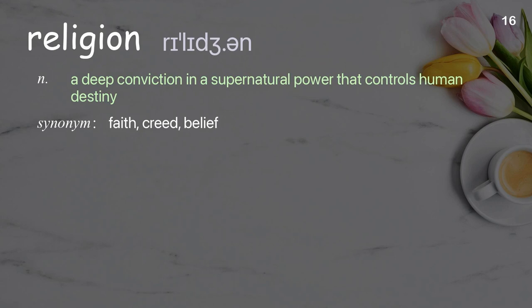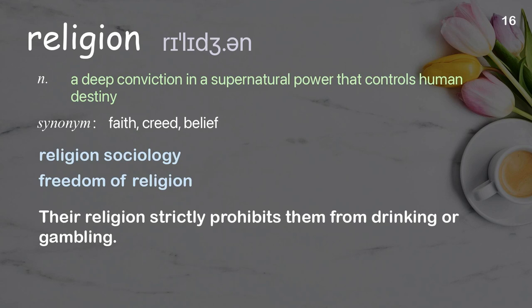Religion: A deep conviction in a supernatural power that controls human destiny. Examples: religion sociology, freedom of religion. Their religion strictly prohibits them from drinking or gambling.